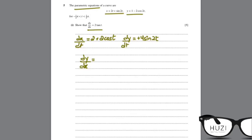So this will be 4 sin 2t upon 2 plus 2 cos 2t. This will be simplified to 2 sin 2t upon 1 plus cos 2t.